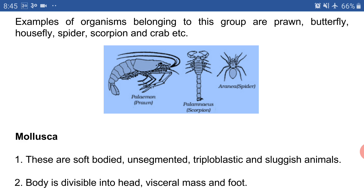Now we have our seventh phylum: phylum Mollusca. The organisms belonging to phylum Mollusca are known as molluscs, and most of the molluscs are aquatic — found in fresh water such as rivers, and also in marine or ocean water. Characteristic number one: these are soft-bodied, unsegmented, triploblastic, and sluggish animals.